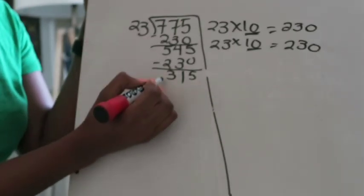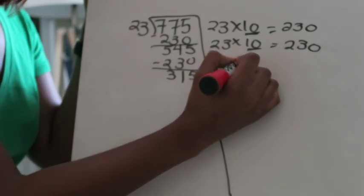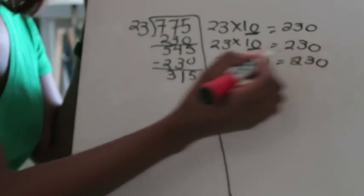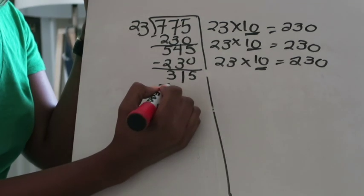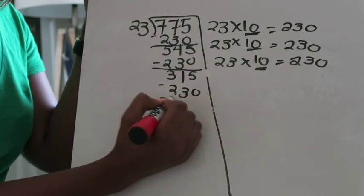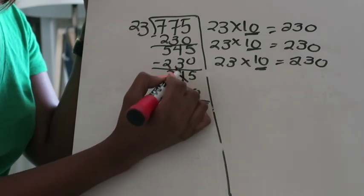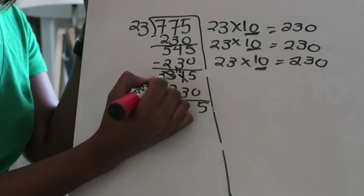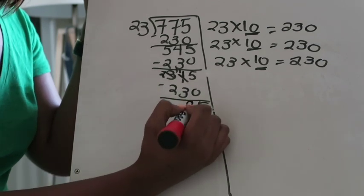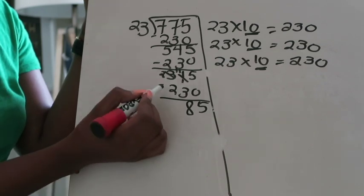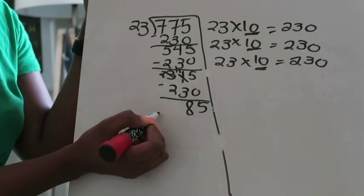I can still keep going. 23 times 10 again. Underline that 10, that's 230. Subtract 230 from 315. 5 minus 0 is 5. We need to regroup here so this becomes 11, that's going to be 2. 11 minus 3 is 8 and 2 minus 2 is 0.